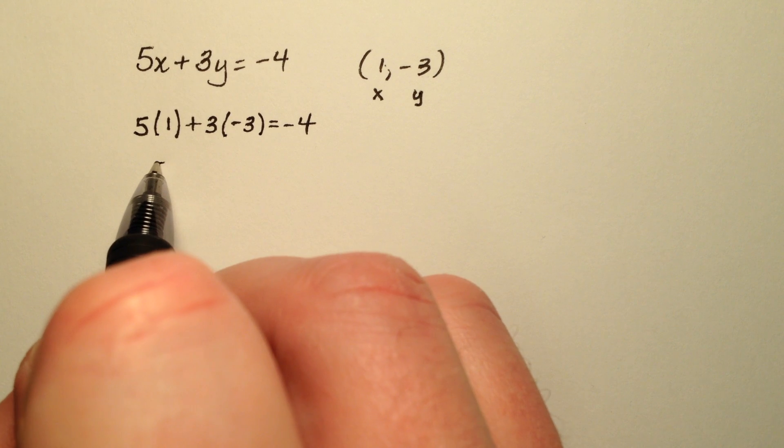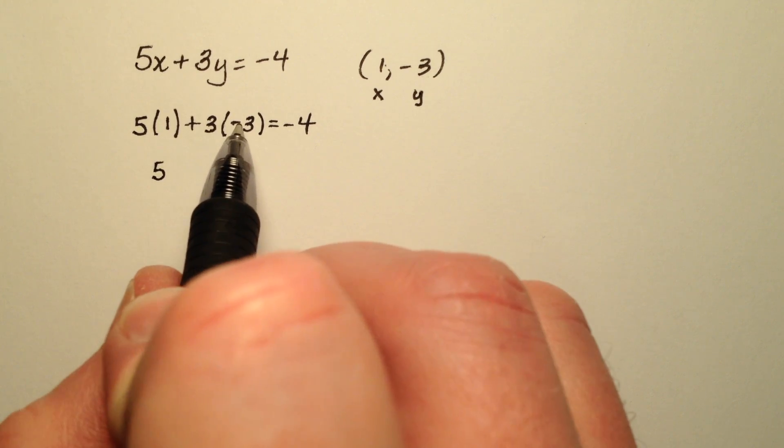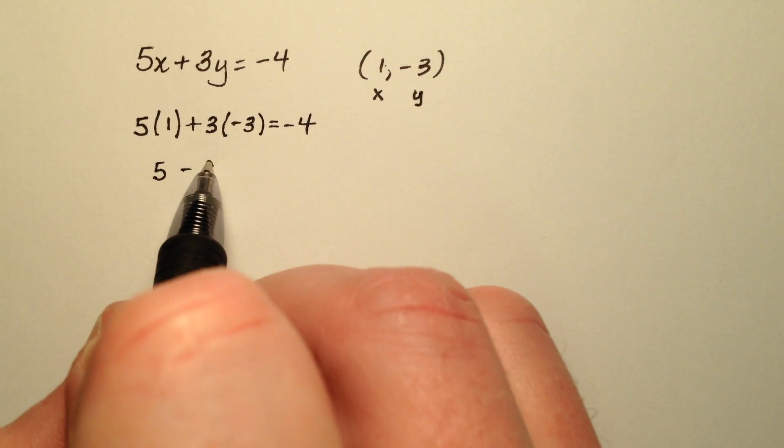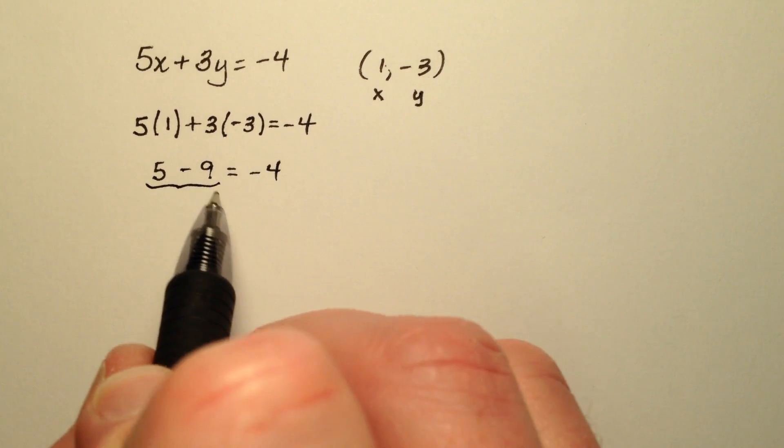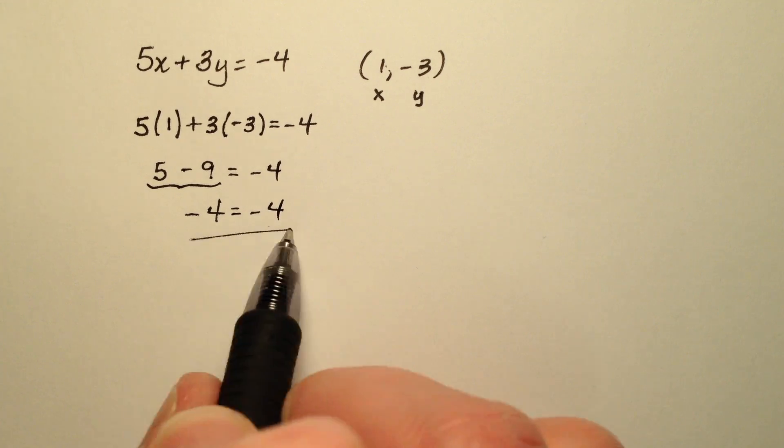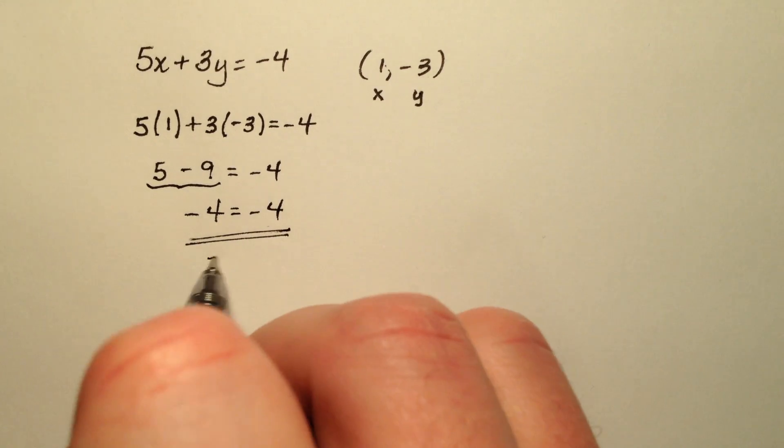So 5 times 1 is 5, 3 times negative 3 is negative 9. And when I simplify 5 minus 9, I get negative 4 equals negative 4.